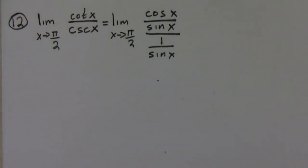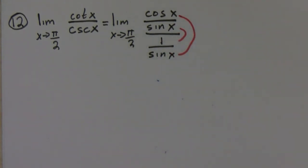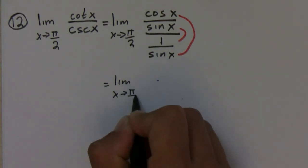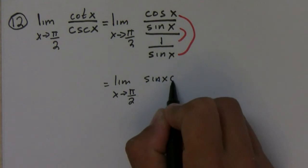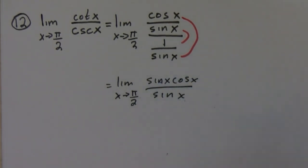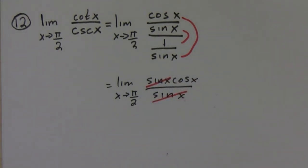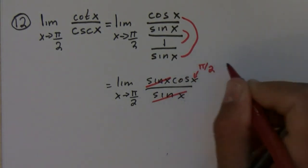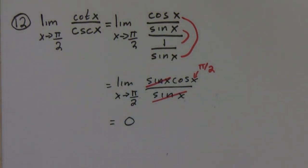If I do that, I would get that this is equal to the limit as x approaches pi over 2 of cosine x over sine x. And these guys cancel. If I now plug in pi over 2 here, I would get that the limit is equal to 0.